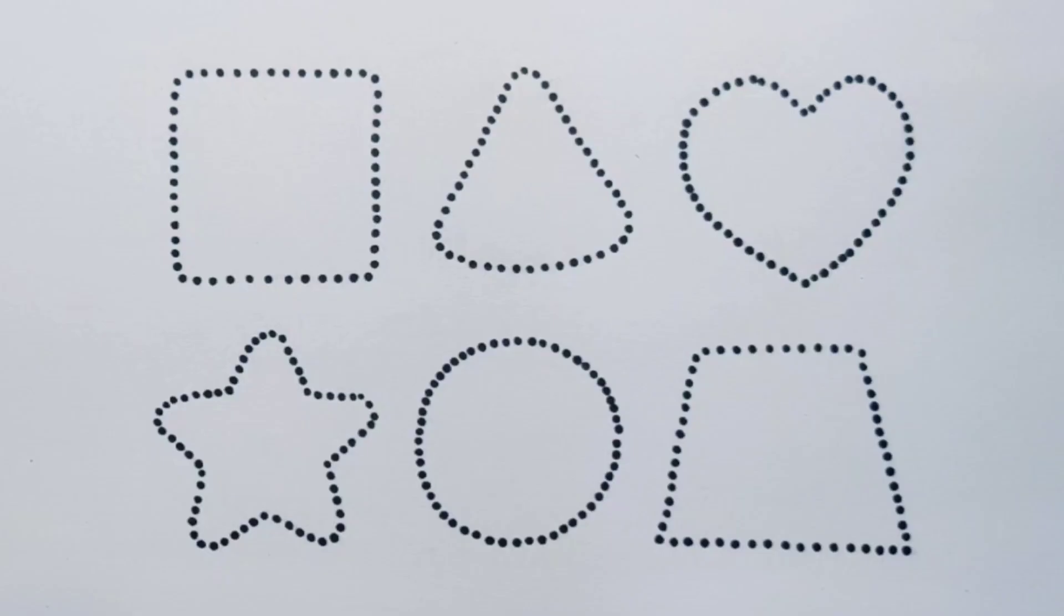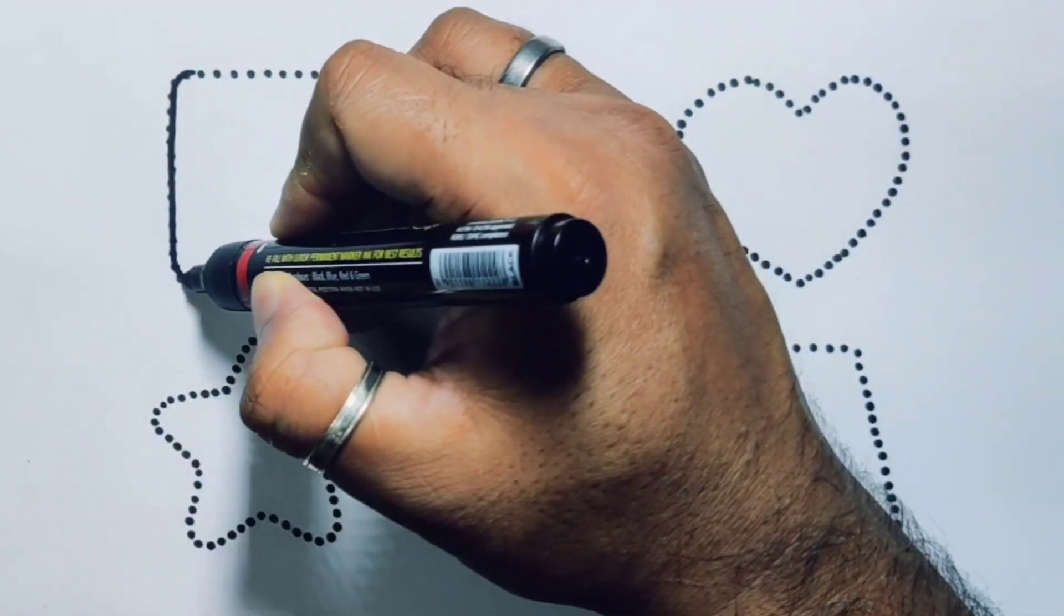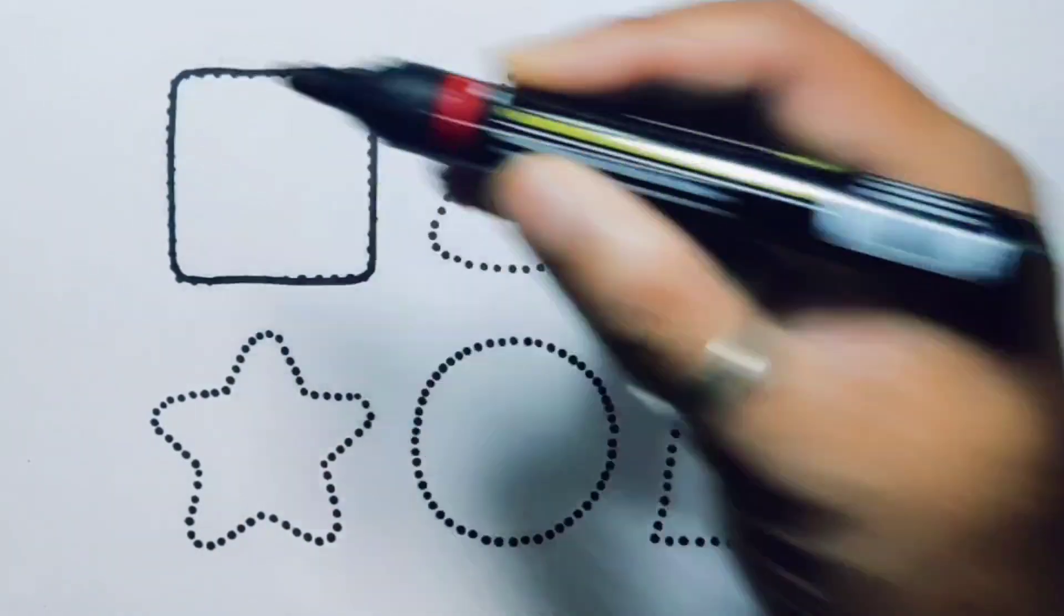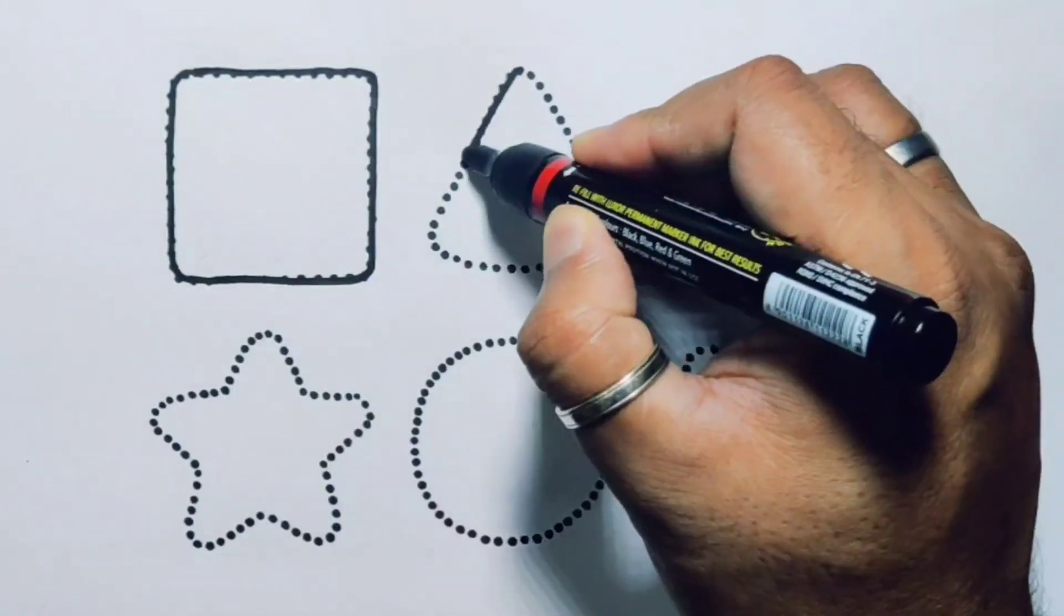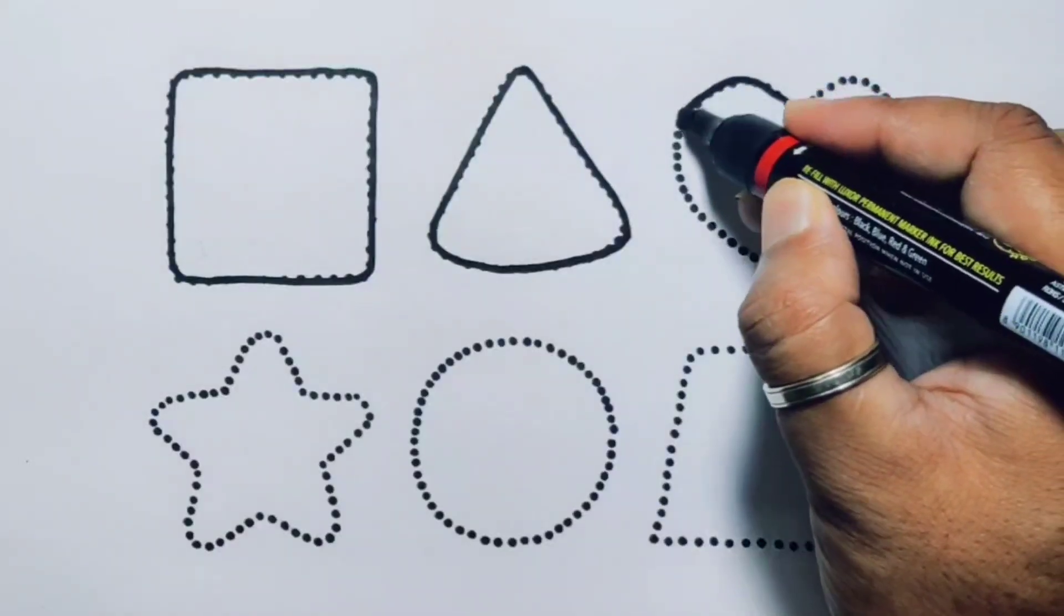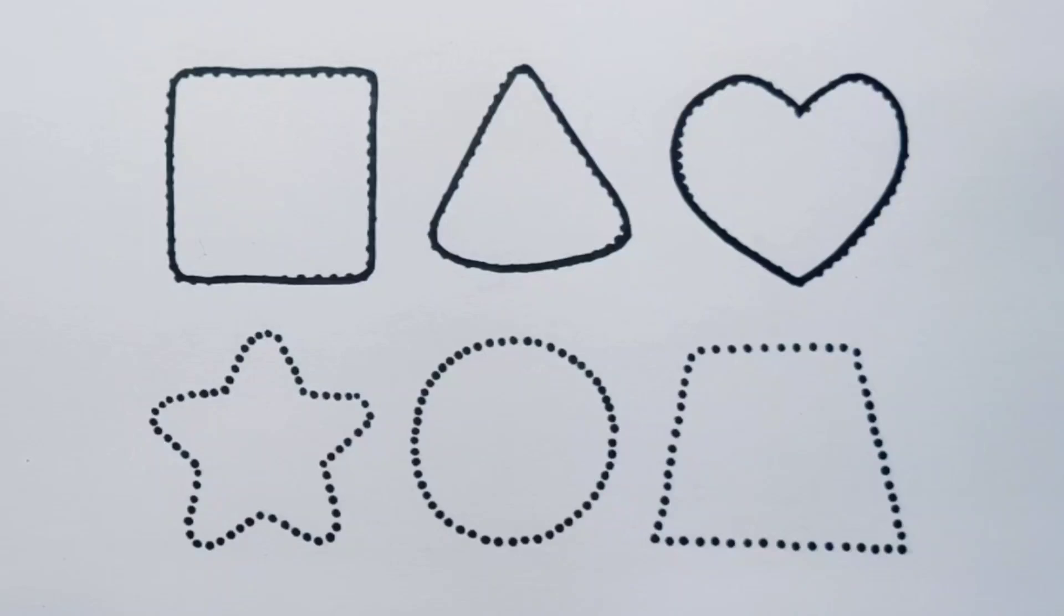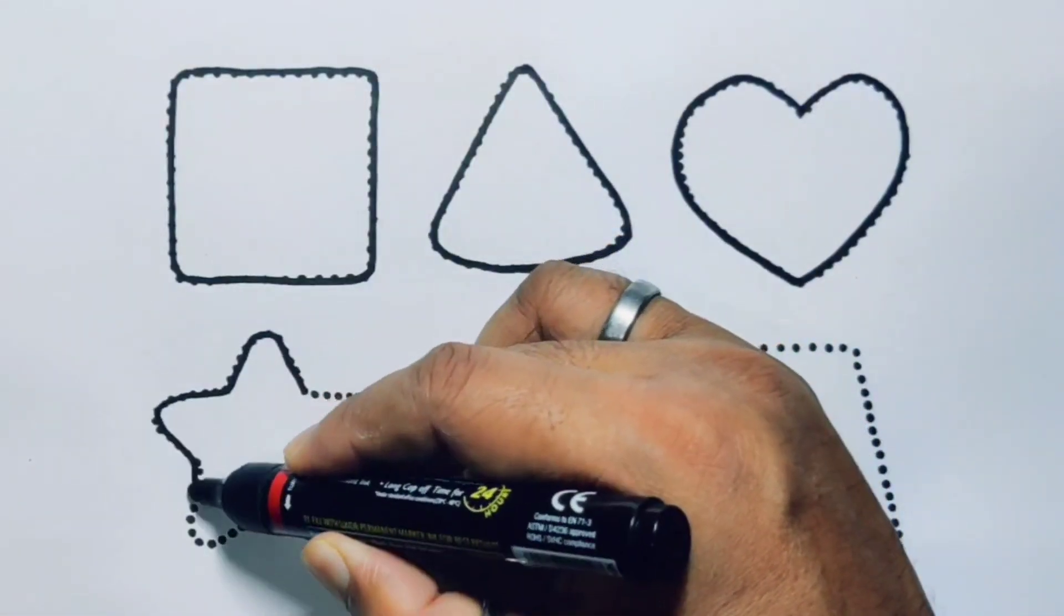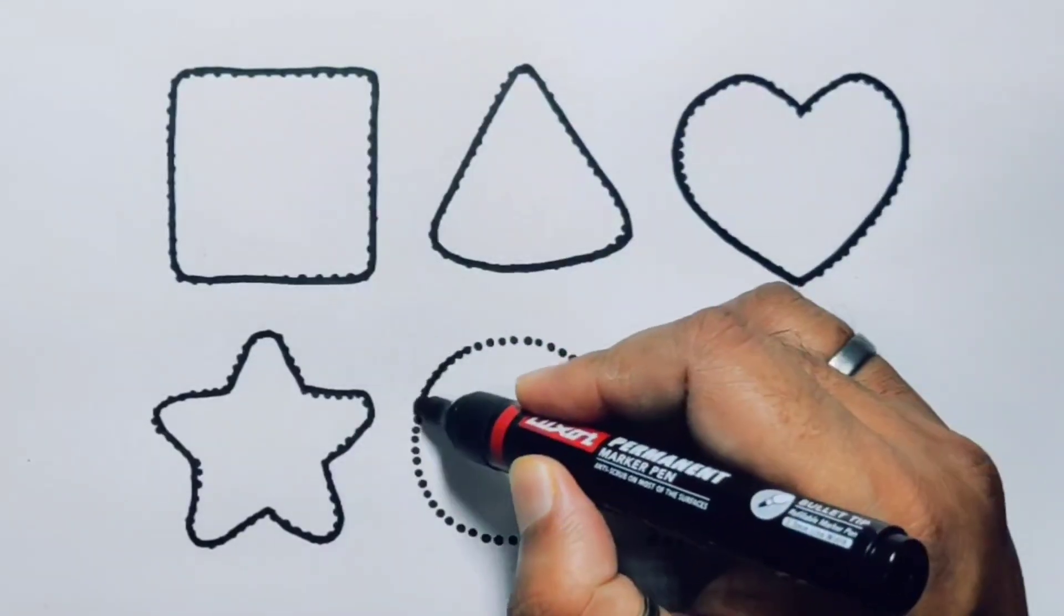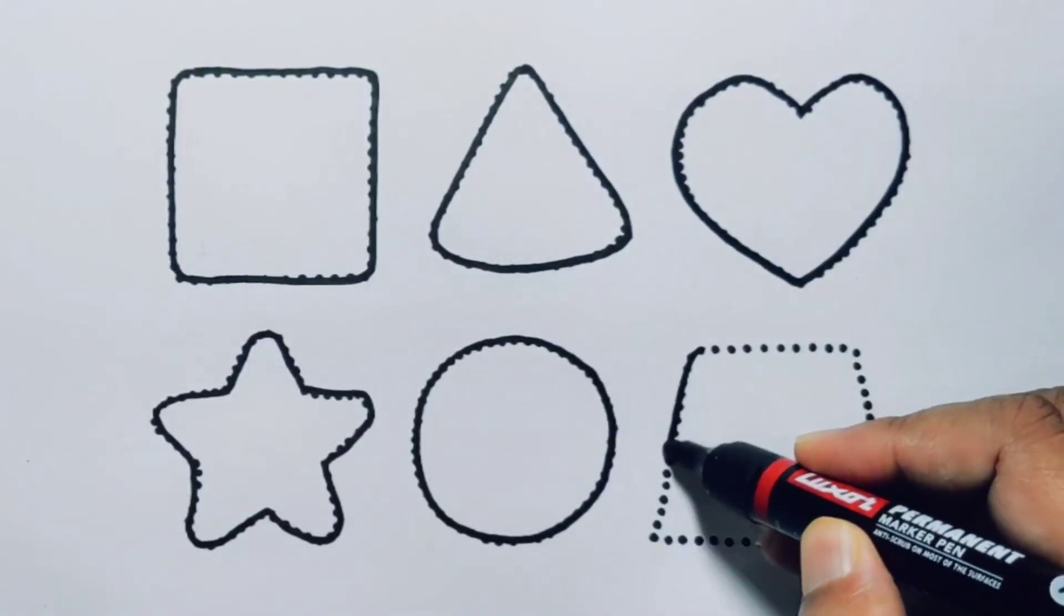First we're going to draw the shapes. Square. Triangle. Heart. Star. Circle. Trapezium.